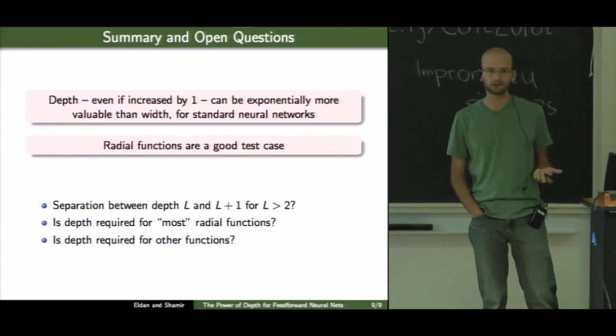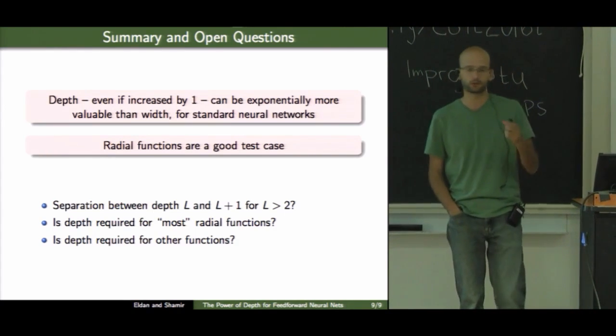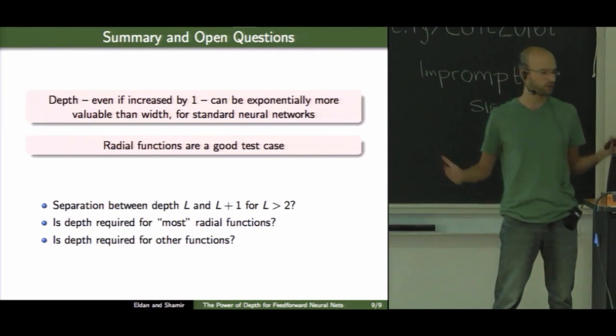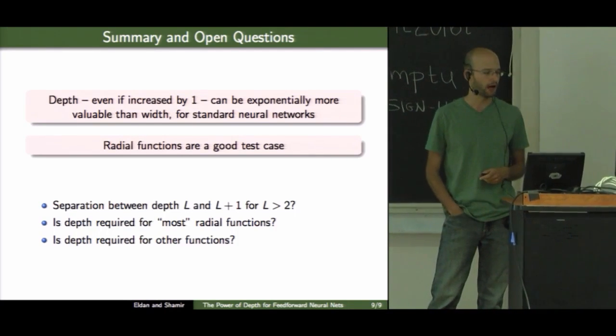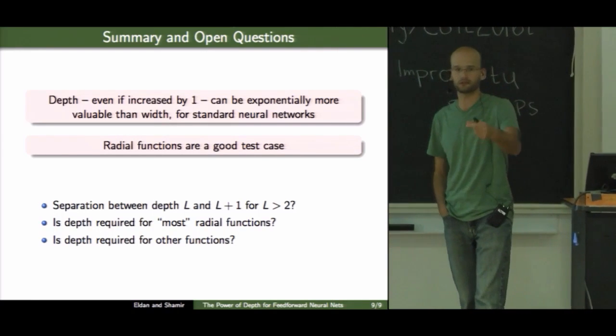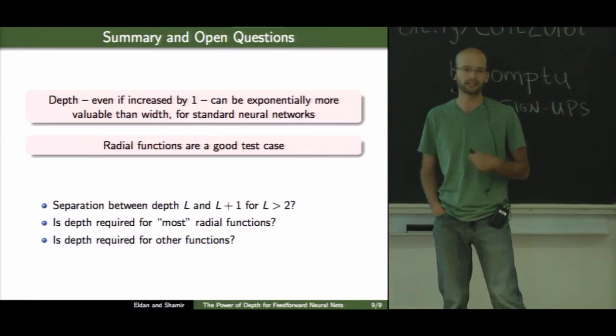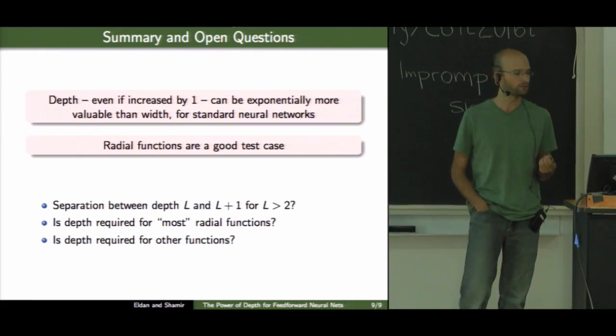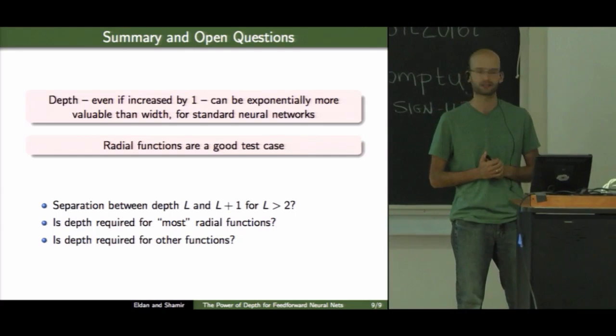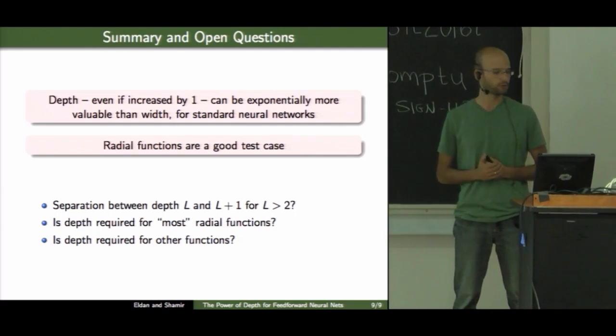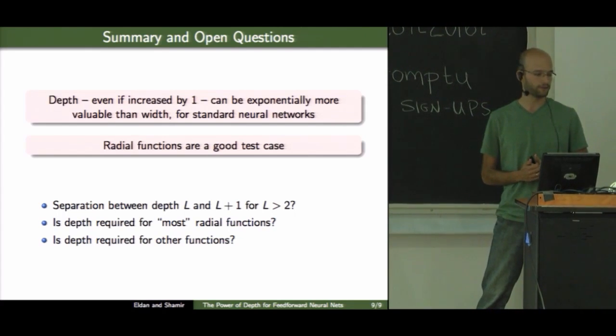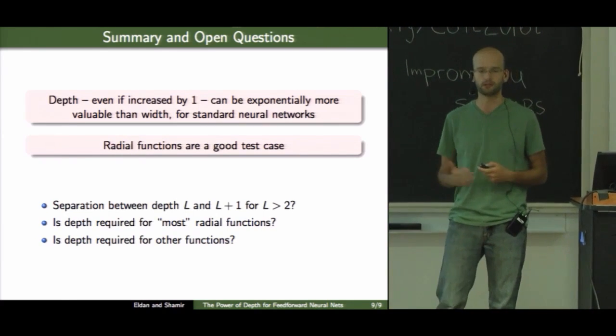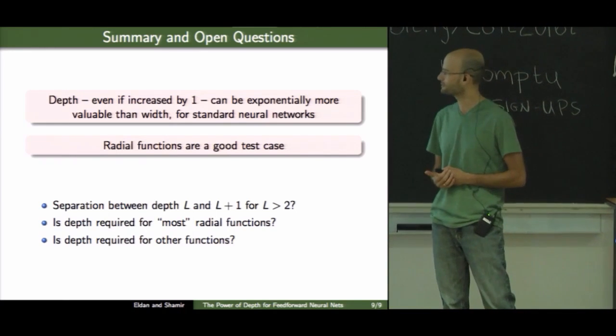And there are some natural open questions. First of all, can we get separation, not just between two and three layers, but maybe L and L plus one for an arbitrary L. We showed the result for a certain carefully constructed radial function. We suspect that actually similar results could be shown for most radial functions in a certain sense, but we don't know how to prove it at the moment. And of course, trying to identify other kinds of functions which provably require depth. So I'll stop here. Thank you very much.